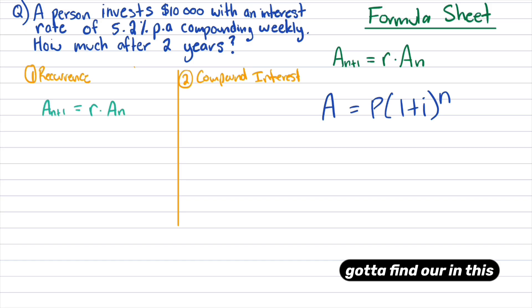Let's go through the recurrence relation first. The first thing I've got to do is I've got to find R. In this case, it's just going to be 1 plus 0.052 divided by 52 because we're compounding weekly. That gives us a value of 1.001. And then therefore from that, we can write our recurrence relation with A0 being 10,000.